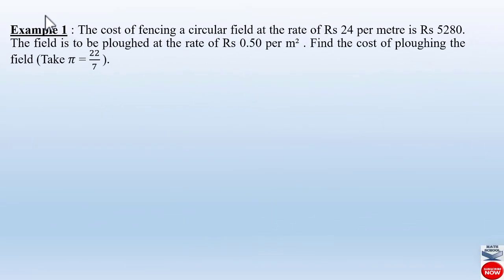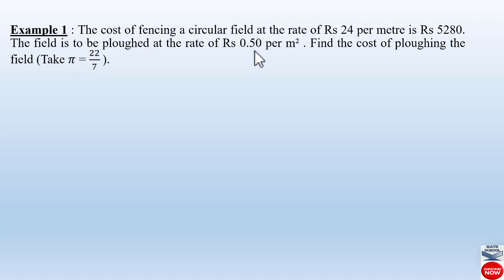Example 1 from chapter 5, Areas Related to Circles, says: the cost of fencing a circular field at the rate of rupees 24 per meter is rupees 5,280. The field is to be plowed at the rate of rupees 0.50 per meter square. Find the cost of plowing the field. Take pi as equal to 22 divided by 7.